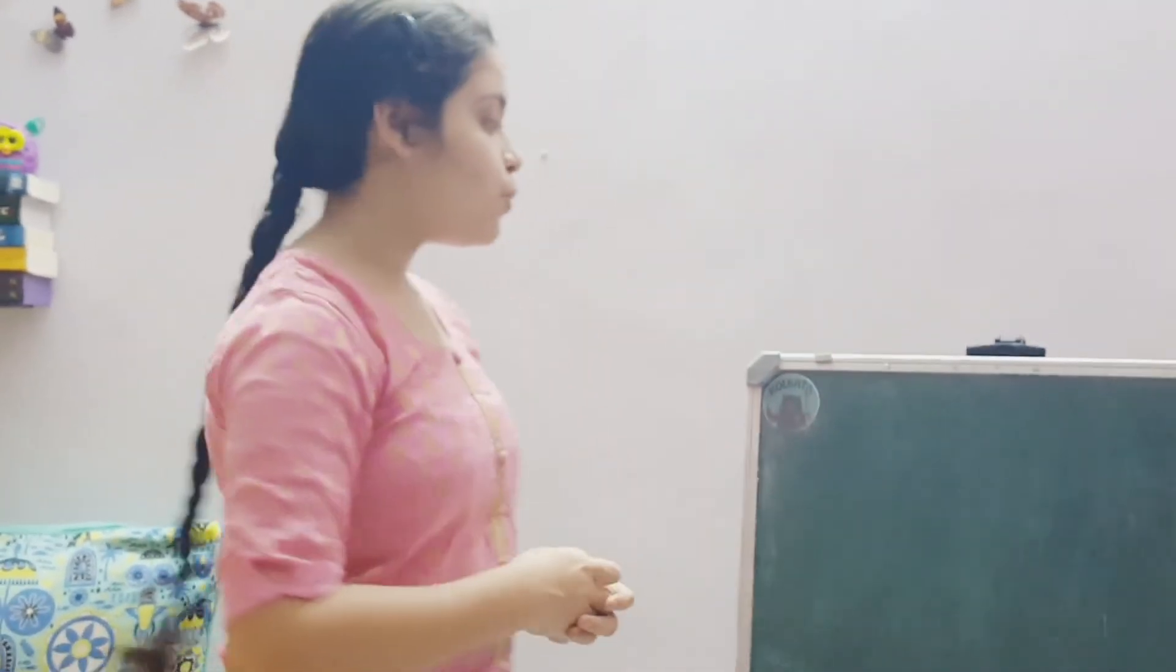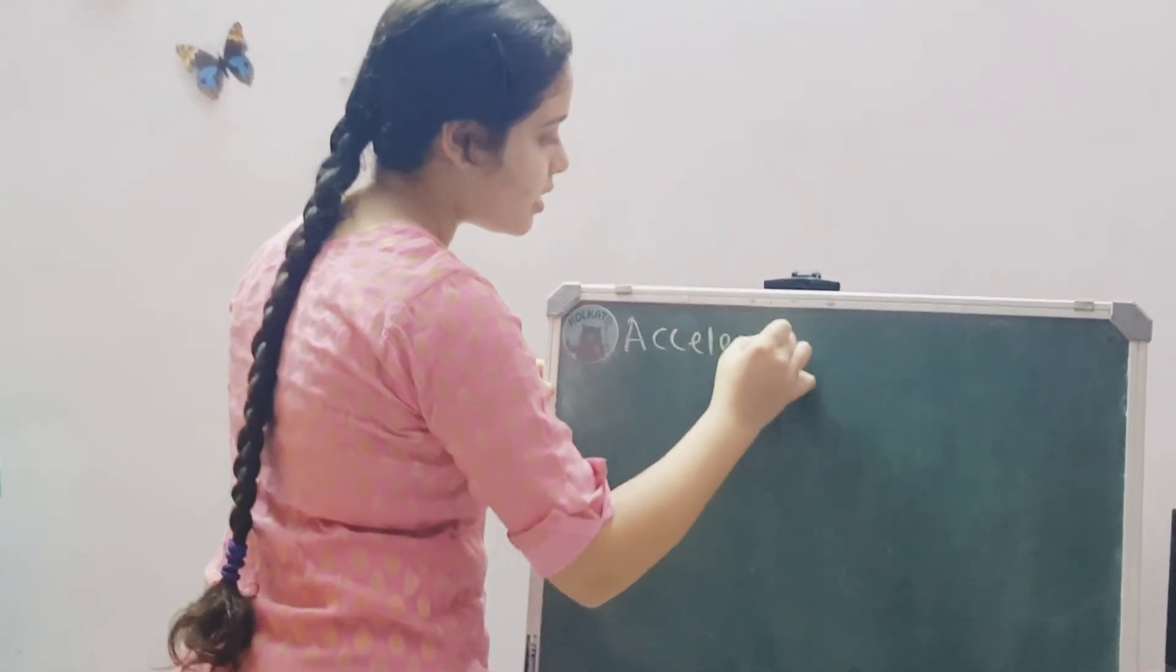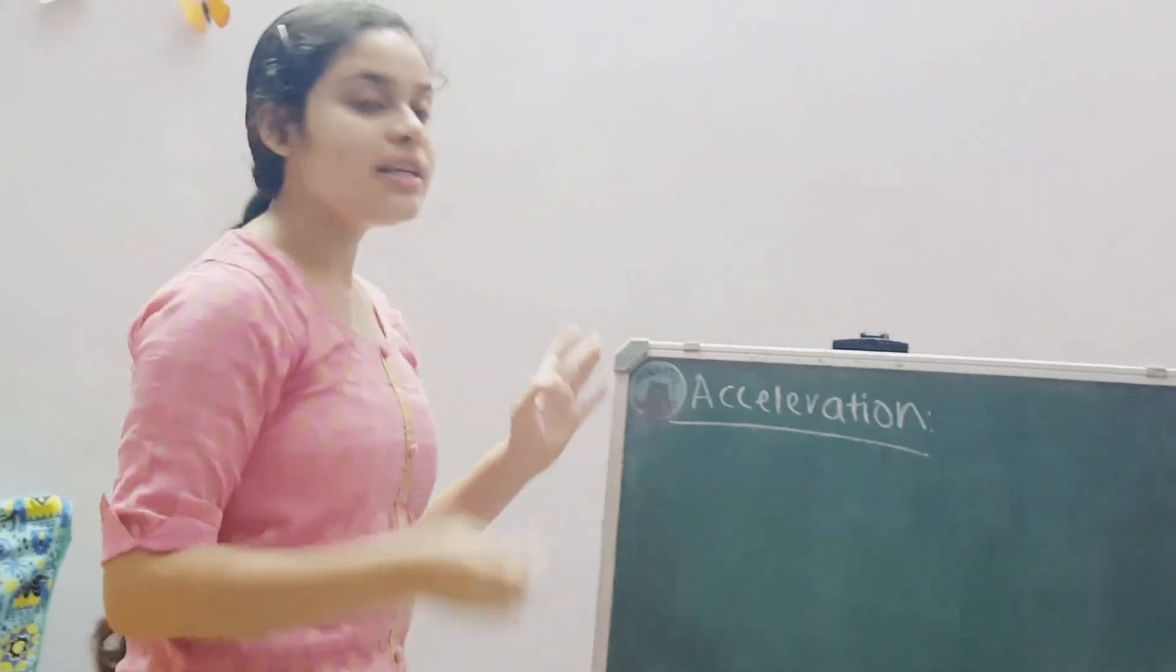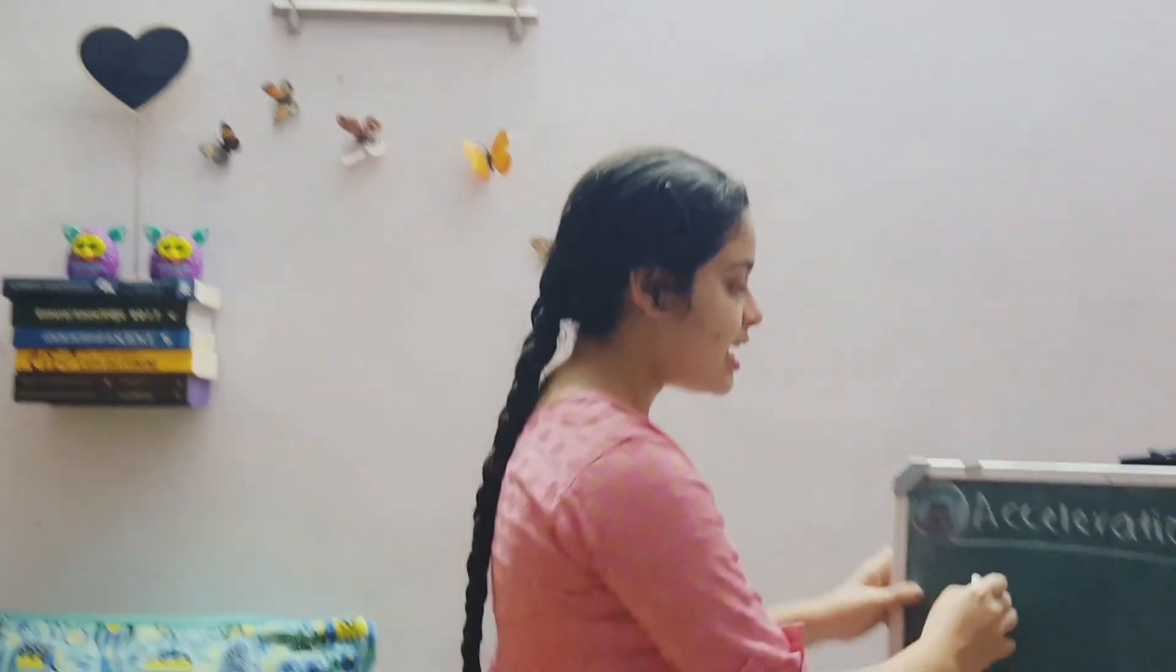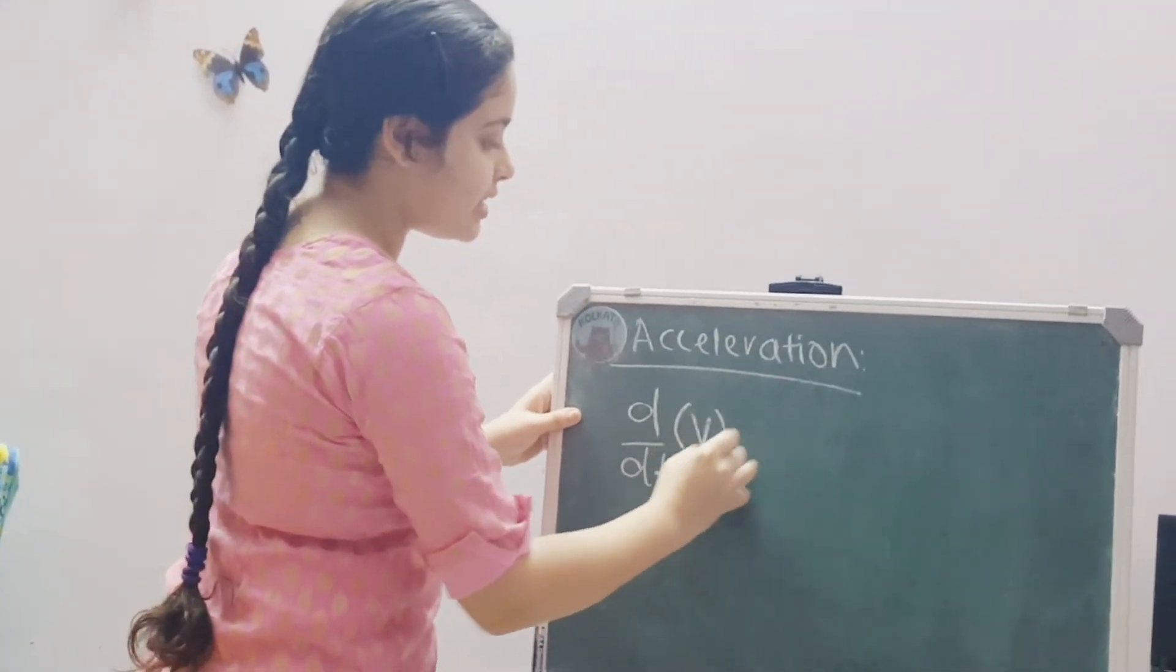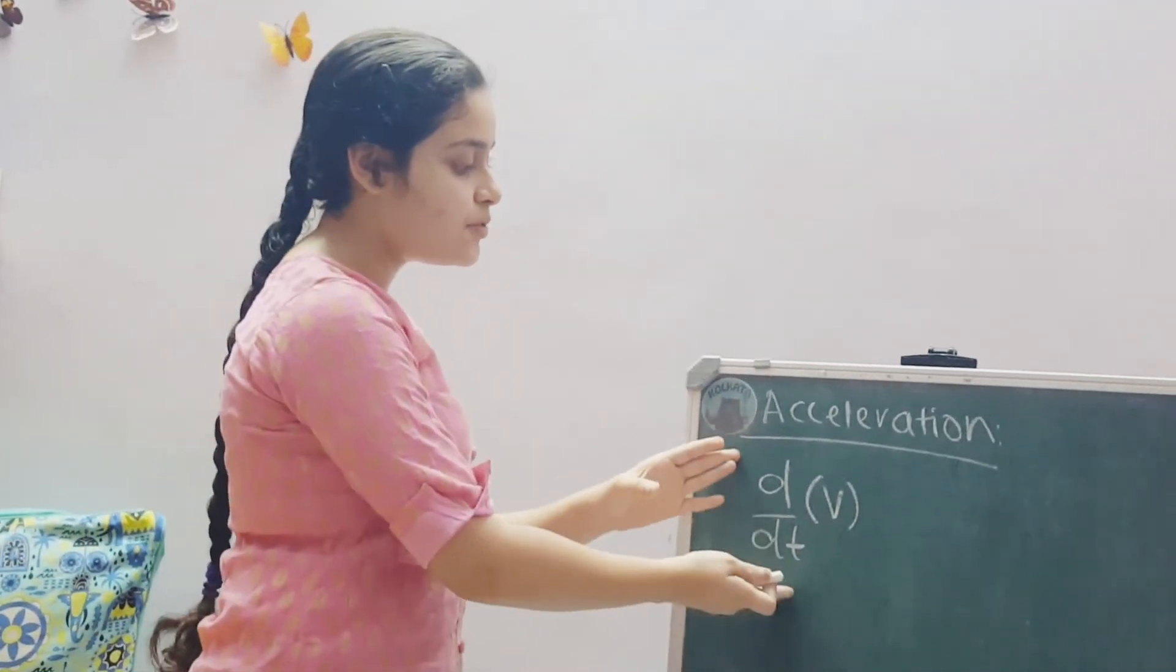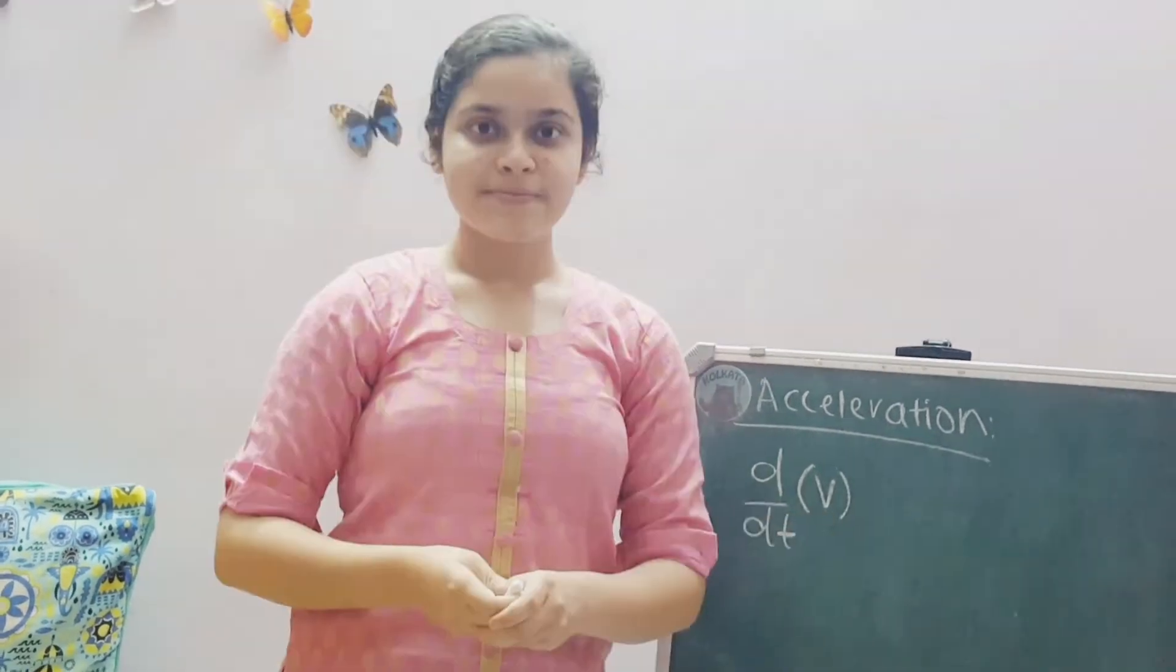Now, let us quickly discuss another concept which is acceleration. Commonly, we all say that acceleration is velocity by time. But again here, a mathematical representation of acceleration is derivative of velocity. That means the rate of change of velocity. Again, rate of change is denoted by d by d of velocity.